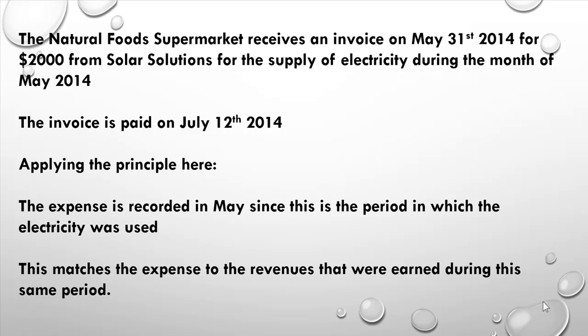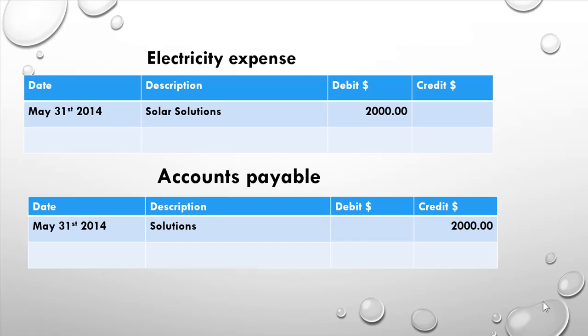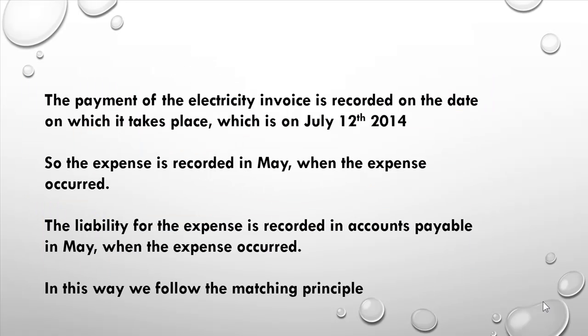The invoice is paid on July the 12th, but applying the matching principle, the expense is recorded in May since that's the period in which the electricity was actually used — matching the expenses to the revenues earned during that same period. Our accounting entries are to debit the electricity expense with $2,000 and credit accounts payable with $2,000. The payment is then recorded on July the 12th, when it actually takes place.